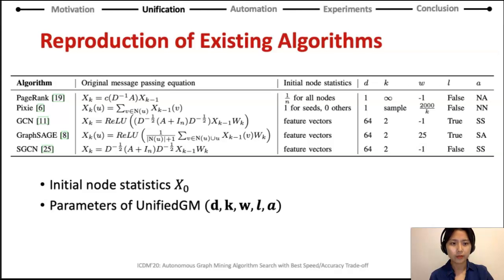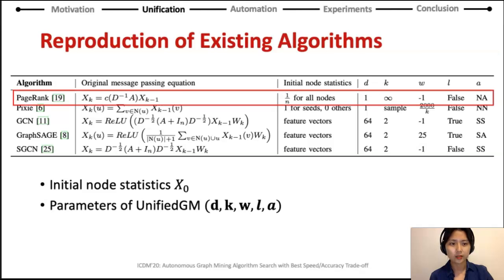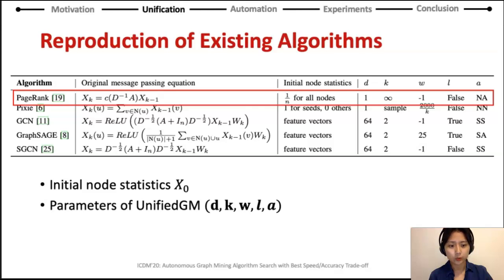We introduce the most popular graph mining algorithms exploiting the message passing scheme and show how they can be represented under Unified GM. This table shows how to set initial node statistics and parameters of Unified GM to reproduce the original graph algorithms. For instance, for the PageRank algorithm, we assign uniform scores across all nodes as initial node statistics. The dimension is set to 1, so messages become scalars. The step is set to infinity, denoting messages are passed until convergence. Width W is minus 1, since PageRank nodes communicate with all neighbors. Nonlinearity is false, since PageRank uses no nonlinearity. The aggregation is set with no self-loop and asymmetric normalization.